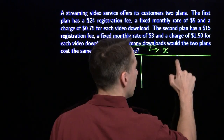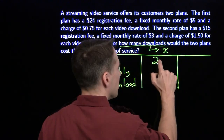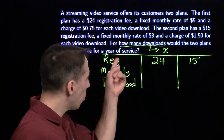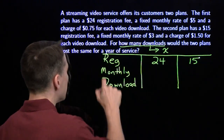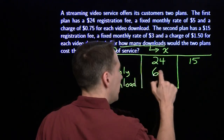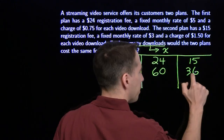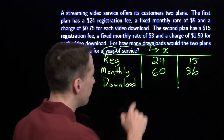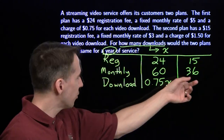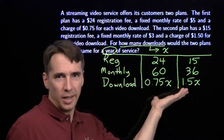I'm going to have one column for each one of the plans. The registration fee is $24 for the first plan, $15 for the second. Now I have to be careful here — always read the question very carefully. If we're looking for how many downloads the two are the same for a year, I care about a whole year. So I take the monthly number and multiply it by 12: that monthly fee is $60 over the whole year for the first plan, and 3 times 12 gives us $36 for the second. The download rate is $0.75 per download, so 0.75x for the first plan, and $1.50 per download for the second plan.